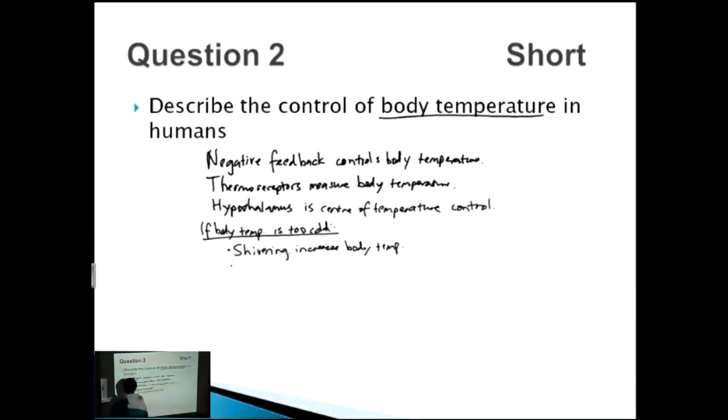You could have vasoconstriction, because when you constrict your blood vessels, you get less blood to the surface of your skin, so the heat is retained within your body. You might also have piloerection, so the hairs on your arm and body stand up to conserve the heat and the air that's trapped in there.